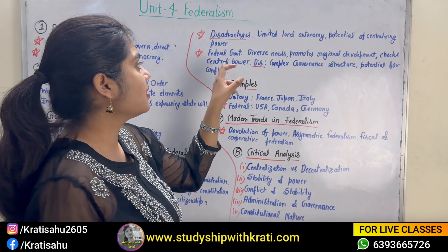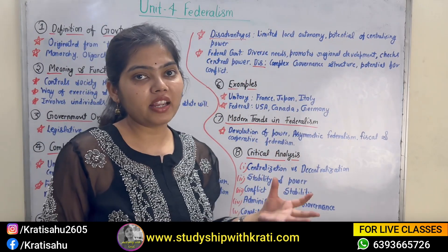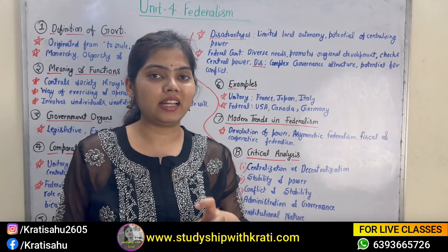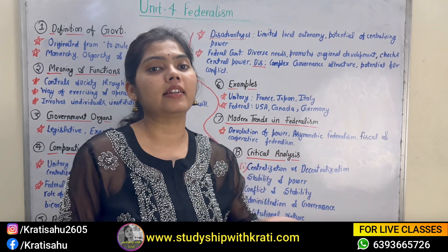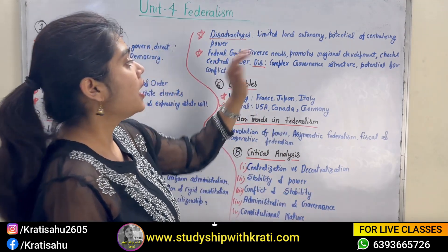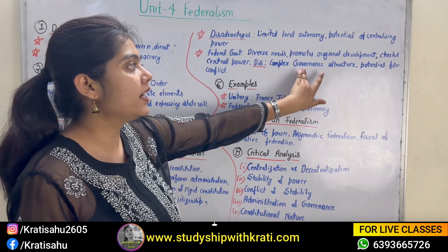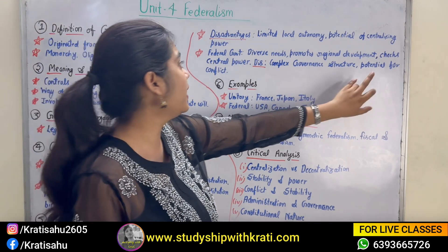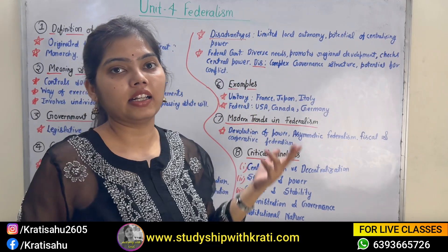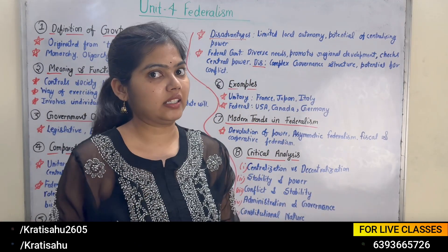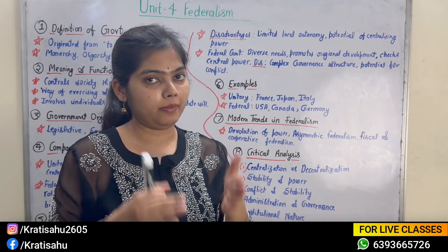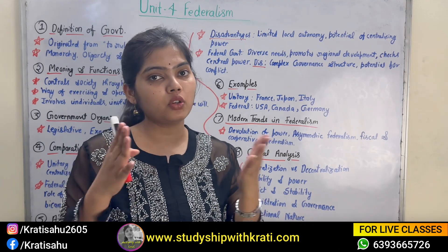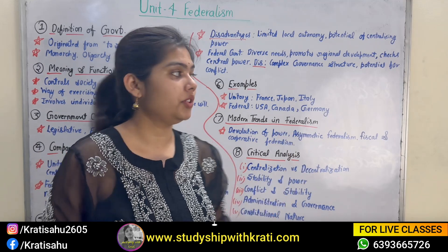In federal government, they talk about diversities and promote regional development, address regional issues, and also check central power — so it's not something that the central can do whatever it wants, because the state is independent and can put forward its own position. The disadvantage is that it has a complex governance structure because it is divided at different levels. There is potential for conflict — everyone can have their own opinion on the same issue, with the center thinking one way and the state thinking another, and they have to find common ground.